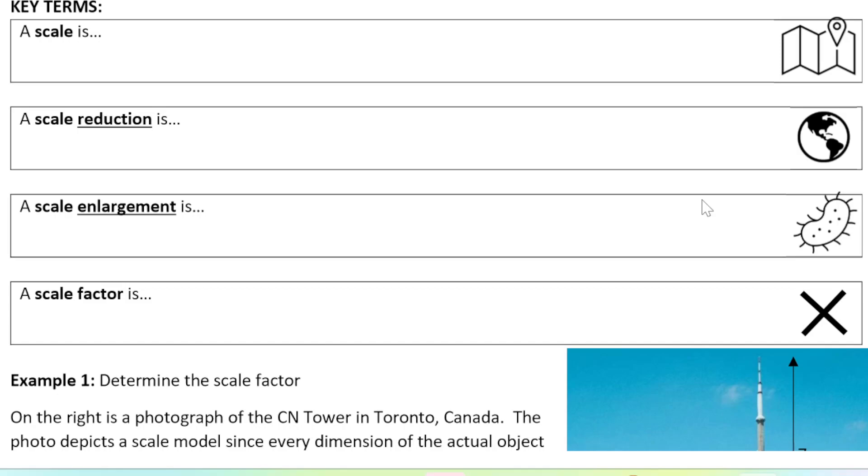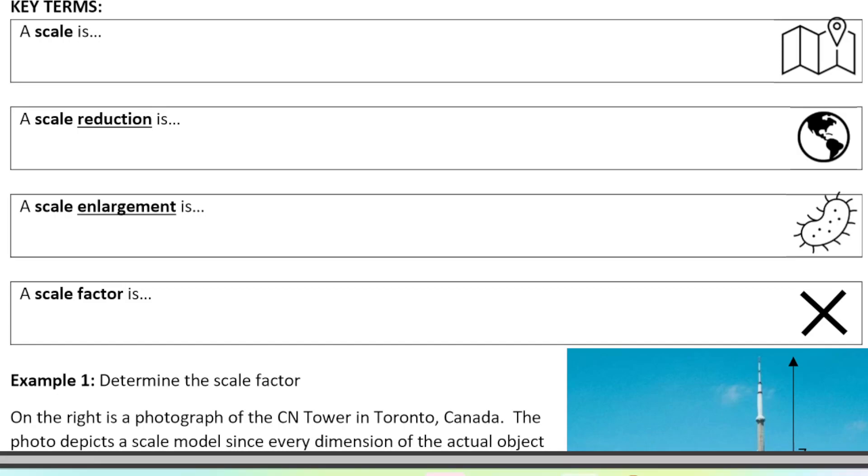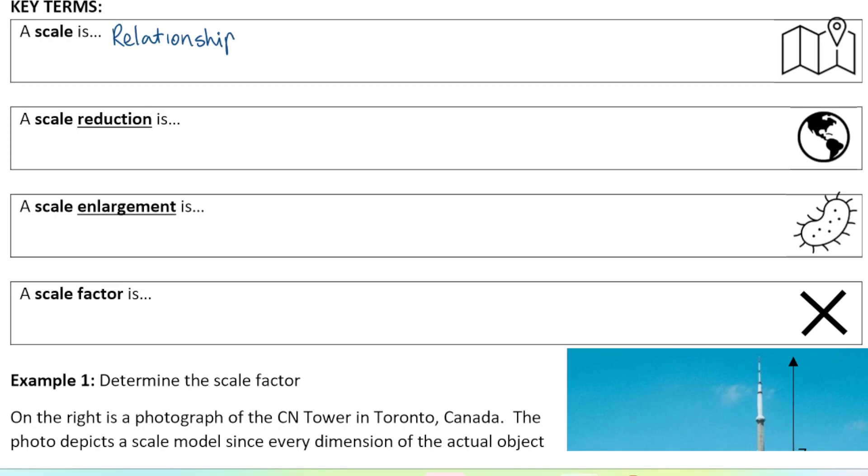Important key terms to start: a scale is a relationship between the drawing size and actual size. Usually we see it as a ratio, and we always write it in a certain order. We always write it as the diagram or the image size to the actual size.